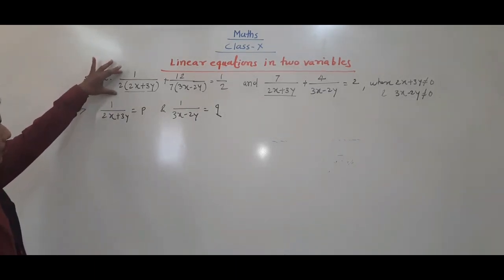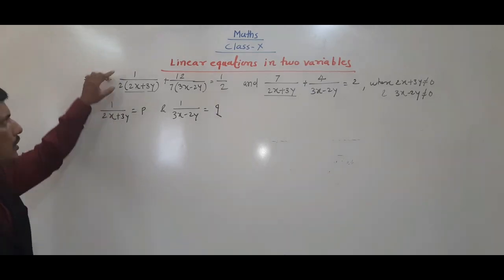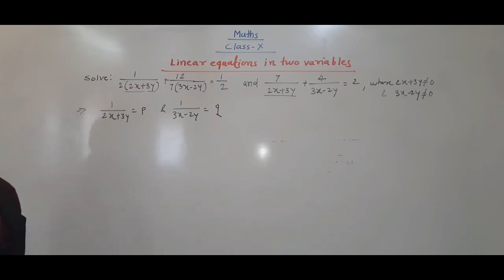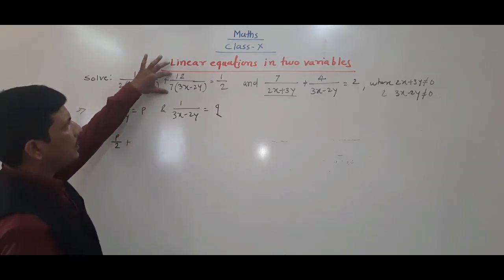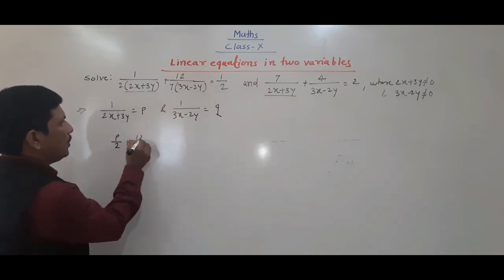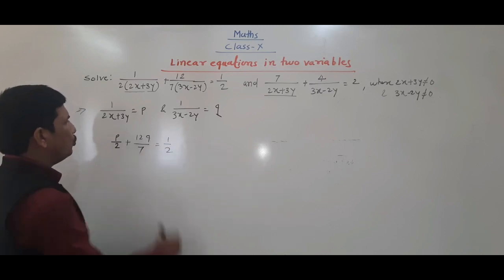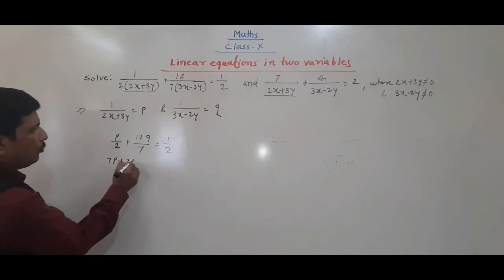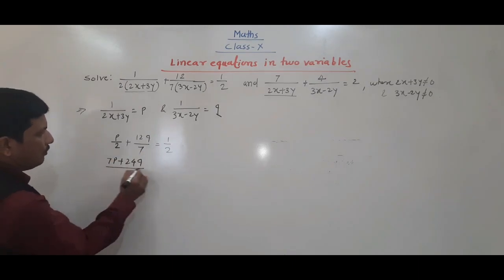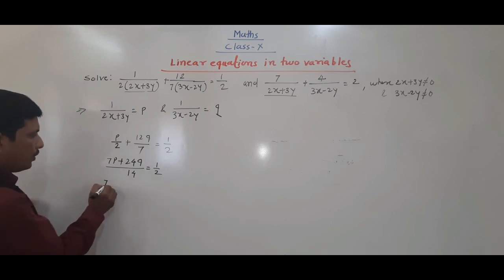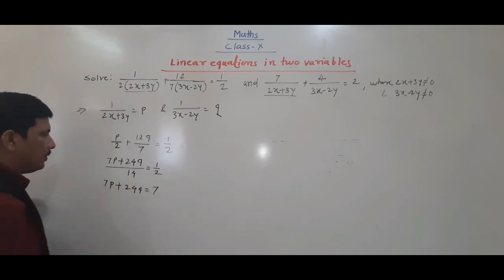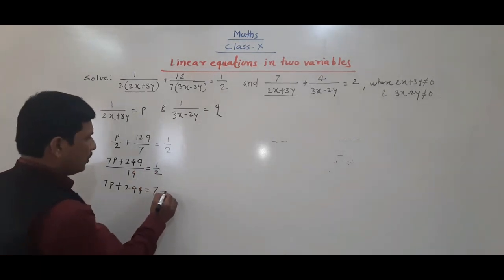So how we can write this: 1 by 2 multiplied by 1 upon (2x + 3y) becomes p by 2, plus 2 upon 7 into q becomes 2q upon 7, which is equal to 1 by 2. Solving further: 7p plus 24q is equal to 14, which gives us 7p + 24q = 7. This is our first equation.